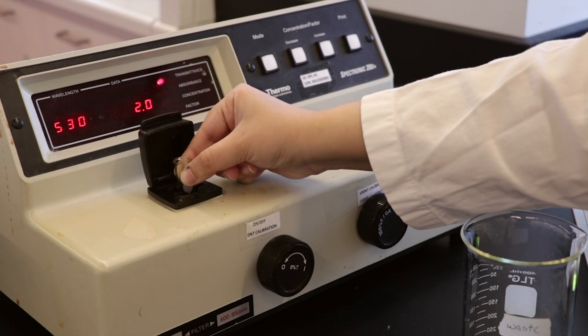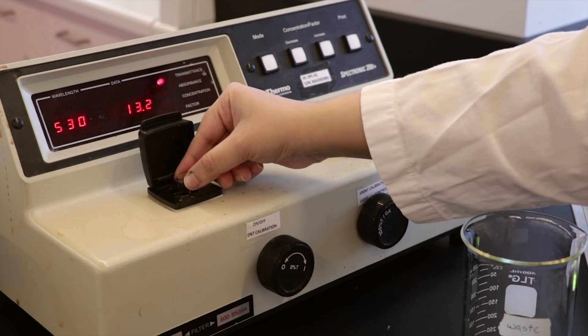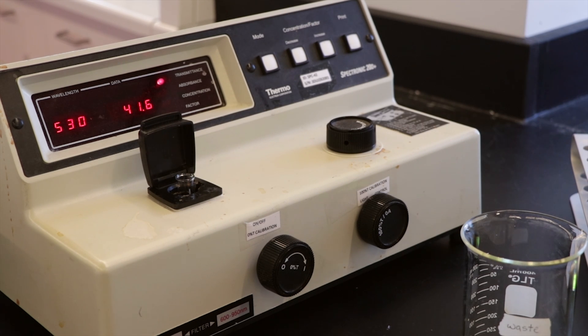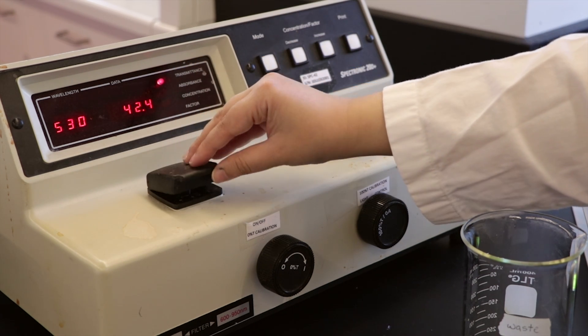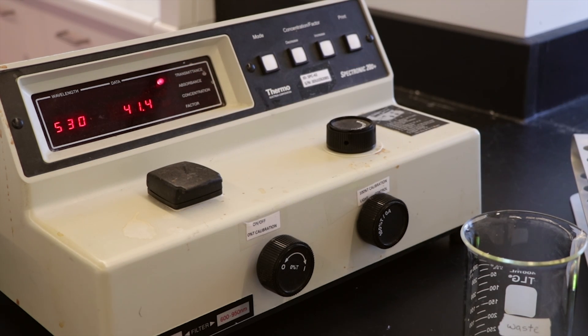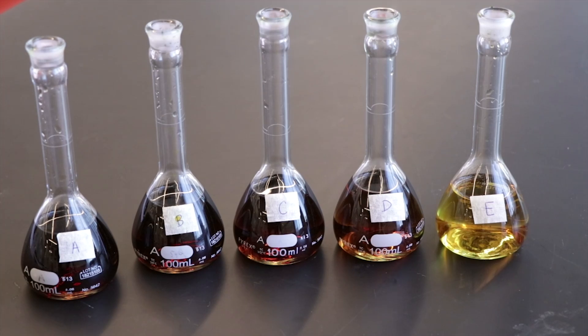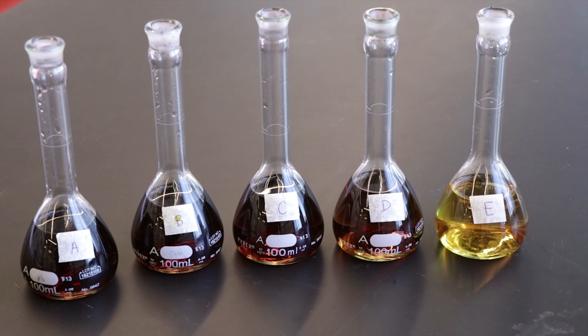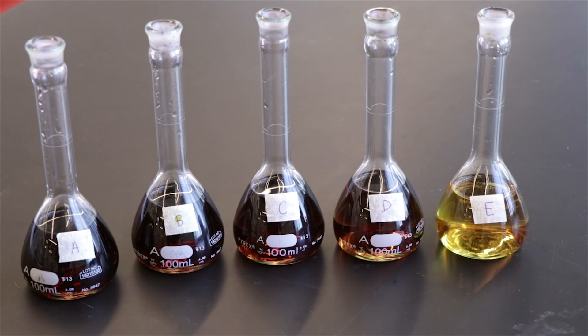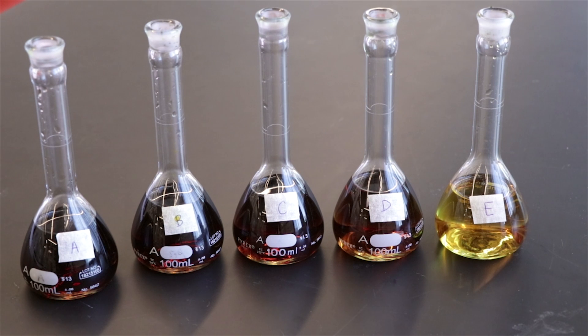To measure the percent transmittance of your standard solutions, rinse and fill the cuvette with the solution and place it in the holder. Close the lid and record the percent T-value displayed on the spec 20. Record the percent transmittance for all five standard solutions. You should analyze your standard solutions in a random order. Note the color gradient from flask A to E.